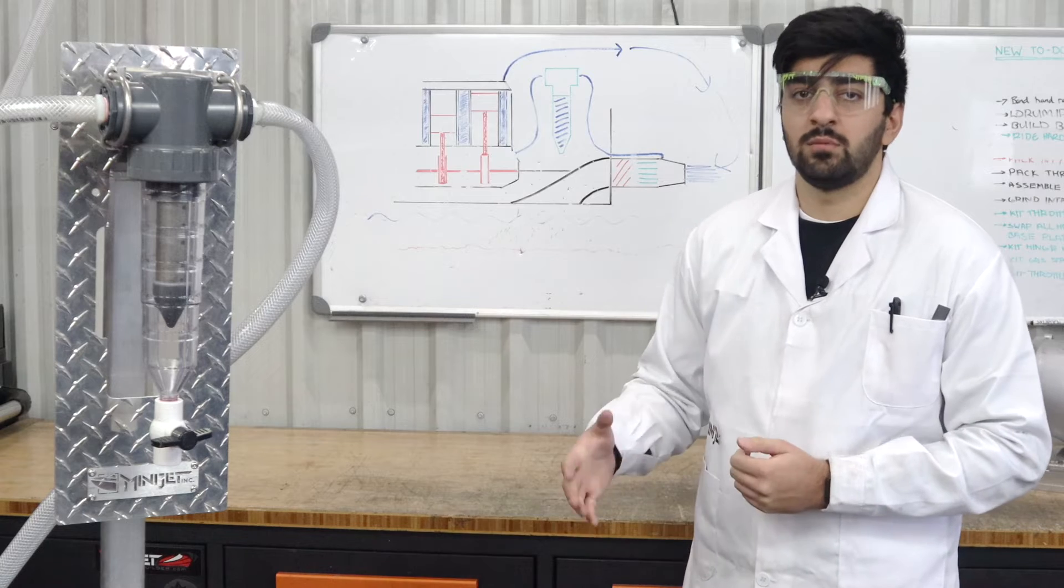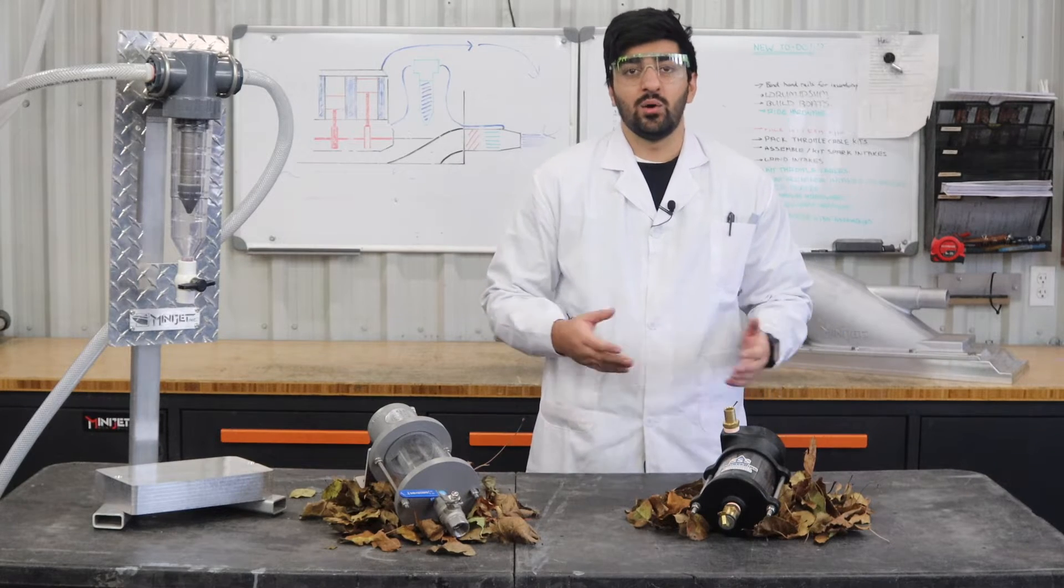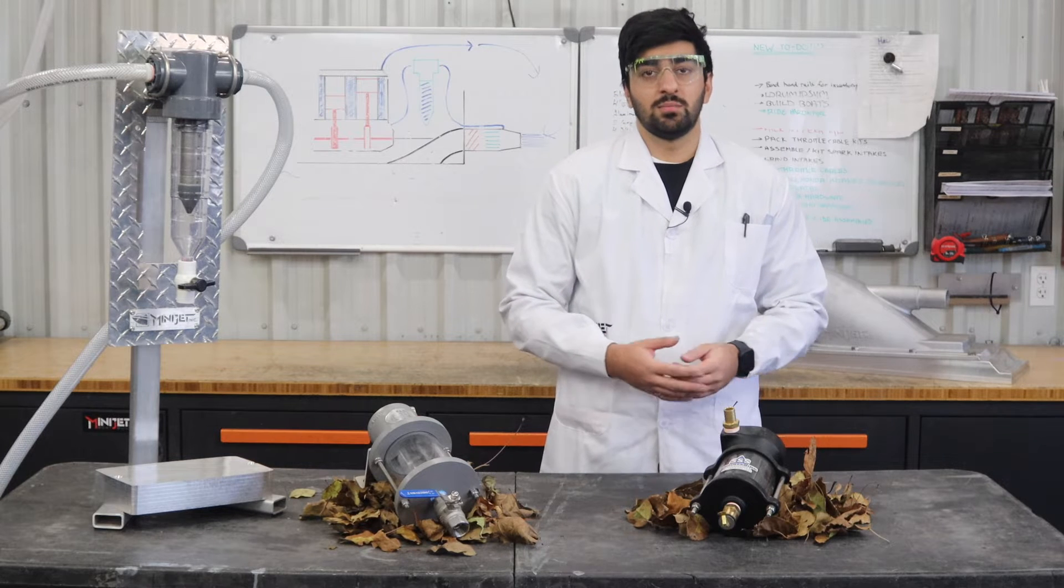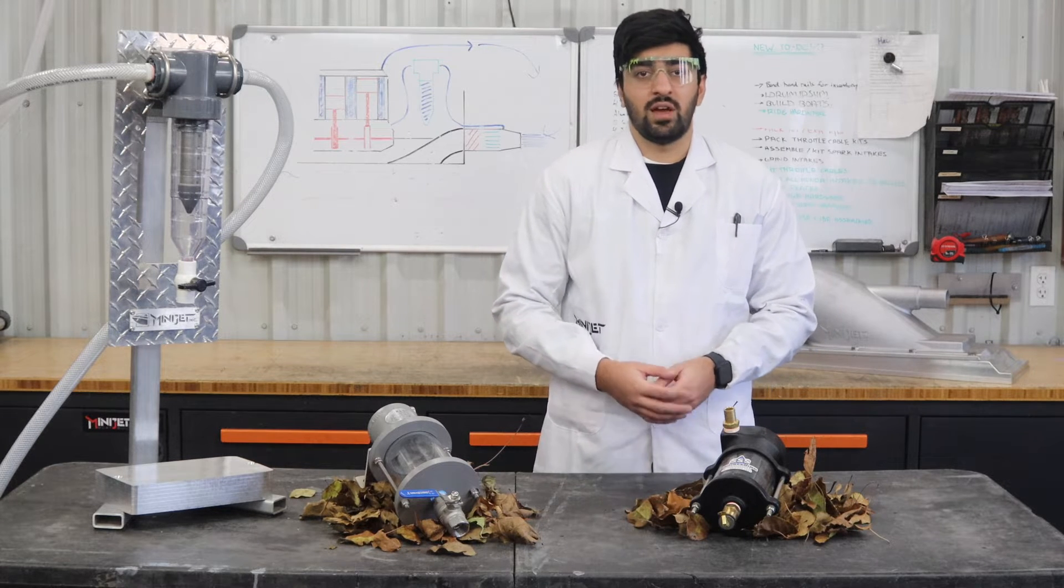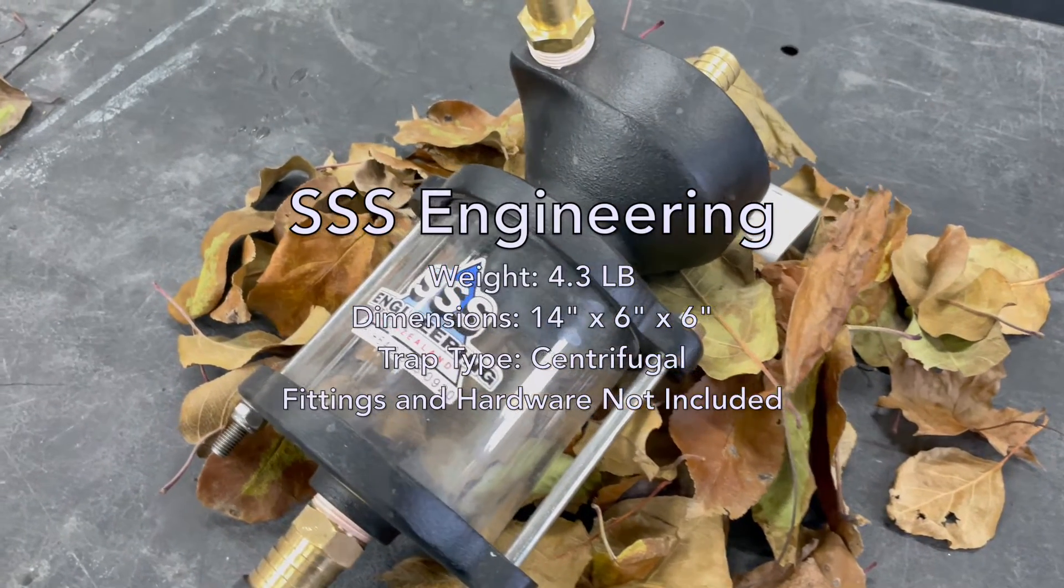Now let's talk about the three sand traps that we're going to be testing today. First, we have the Triple S Engineering sand trap. Out of the box, this is a pretty bare bones unit, so you'll have to supply your own fittings, drain valve, and mounting hardware like we've got here. We're looking at a weight of about 4.3 pounds and overall dimensions of 14 by 6 by 6 inches.